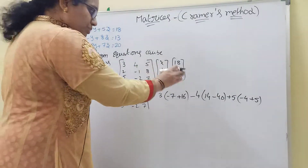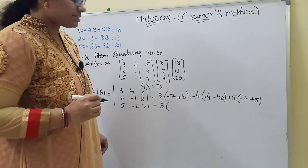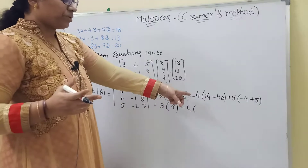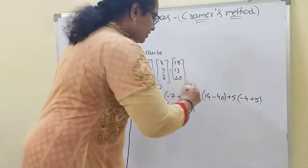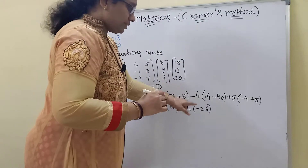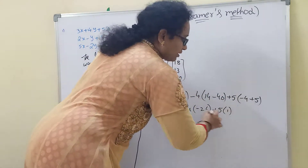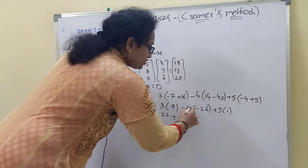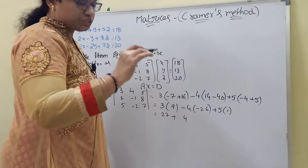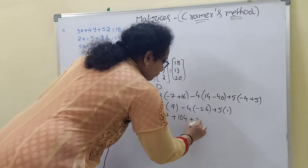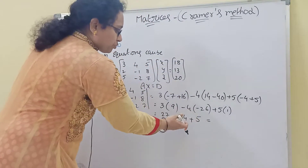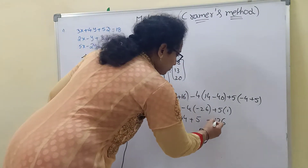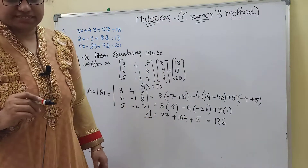Simplifying: 3 times 9 = 27, minus 4 times (−26) = plus 104 — wait, carrying through: 3(9) = 27, −4(−26) = +104 gives issues so computing: 27 + 104 + 5 = 136. Therefore delta equals 136.